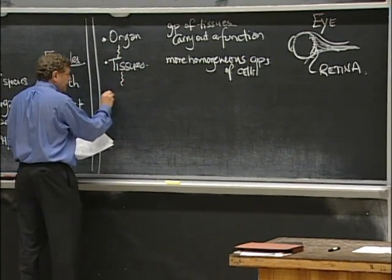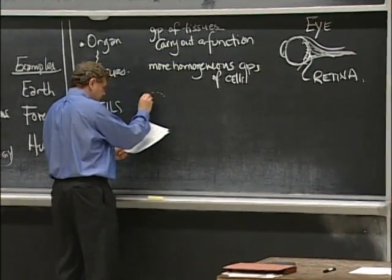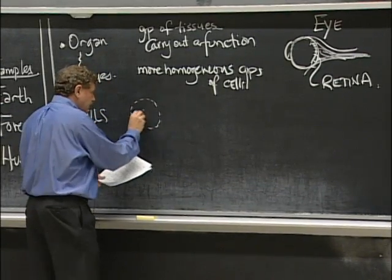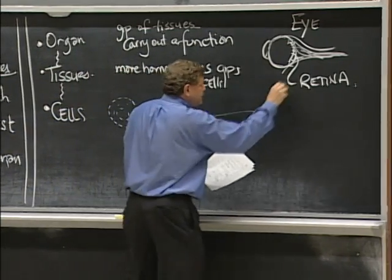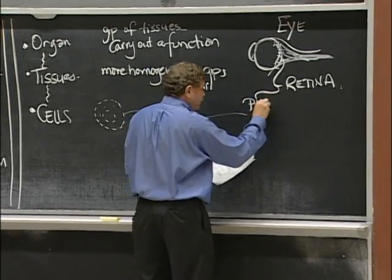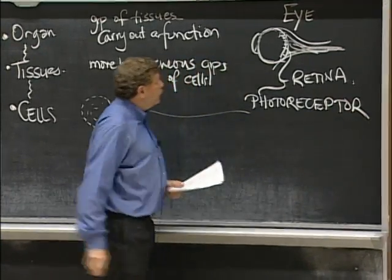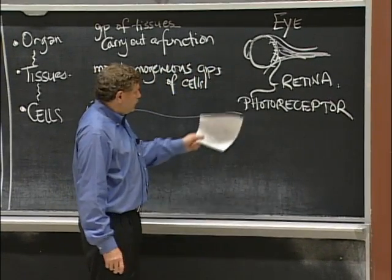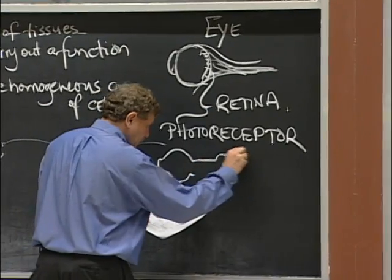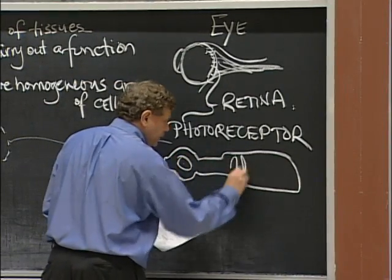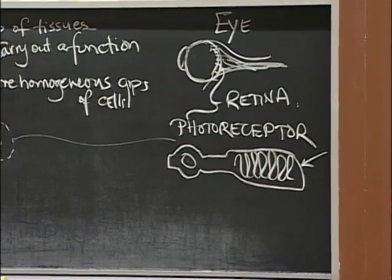Then those tissues are made up of cells. So cells, of course, are bounded by a membrane. They have nuclei, at least in eukaryotes. So let's say within the retina, we could pick a photoreceptor cell. So the MIT student is walking through the forest, and with her eye is getting light on the retina, which is triggering photoreceptor cells. They each have a distinctive shape.